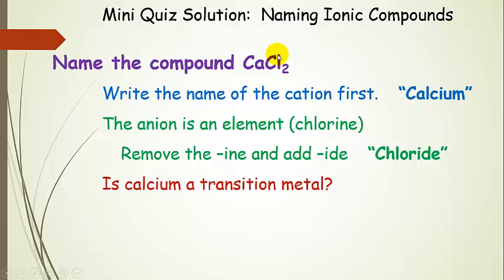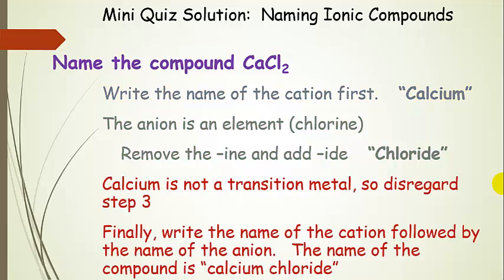This anion is an element and it comes from the element chlorine. So we're going to remove the INE ending and add IDE — that's just naming the anion — so the anion name is chloride. We check: calcium is not a transition metal, it's in Group 2, so we disregard the step about putting the charge in parentheses. We write the cation name followed by the anion name, and the compound name is calcium chloride.